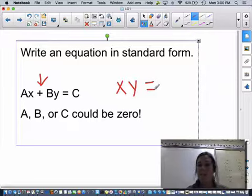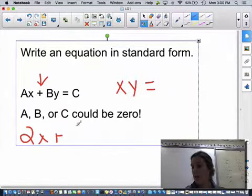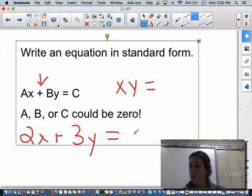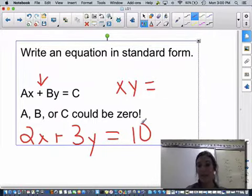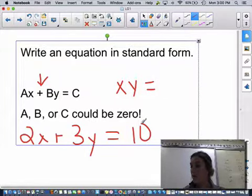So A, B, and C are just representing numbers. So I could have 2X plus 3Y equals 10. So I can write that as a linear or as a standard form, so that would represent a linear function.